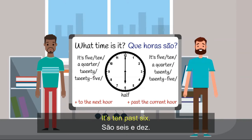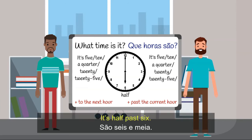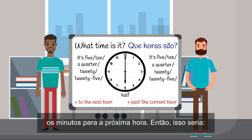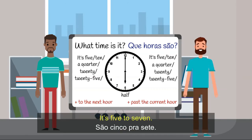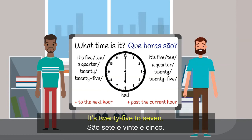It's 10 past 6. It's a quarter past 6. It's 20 past 6. It's 25 past 6. It's half past 6. And when it's pointed to the left, instead of saying past the current hour, say the minutes to the next hour. So that would be: it's 5 to 7. It's 10 to 7. It's a quarter to 7. It's 20 to 7. It's 25 to 7.